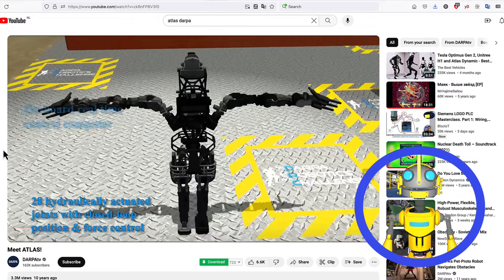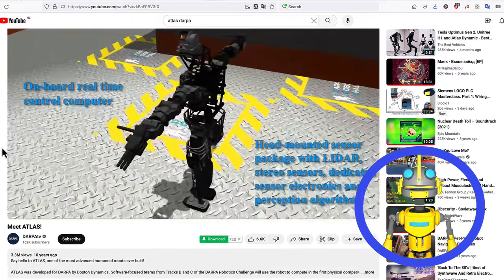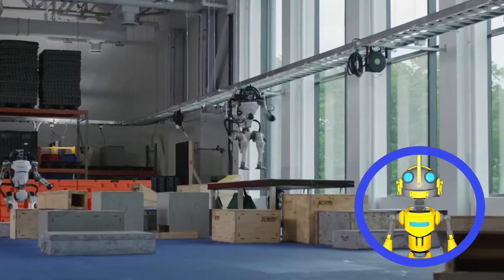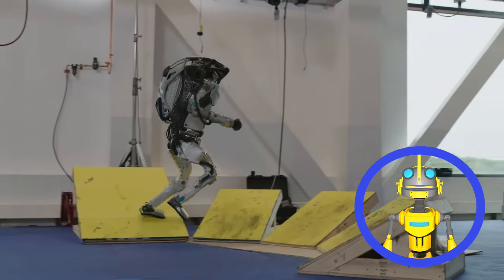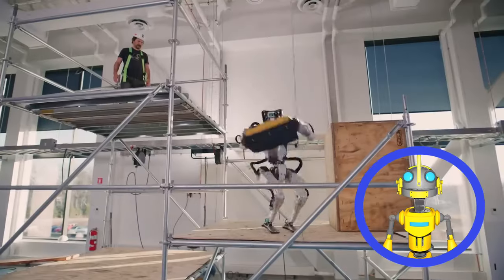This hydraulic powerhouse first stomped onto the scene in the DARPA Robotics Challenge, later impressing the world with its acrobatics and parkour skills. Over the years, Atlas became a viral sensation,